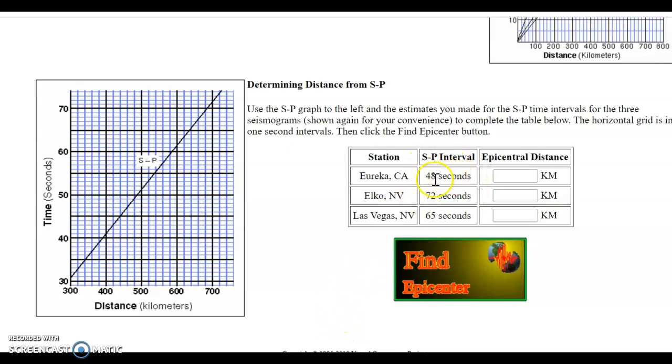S-P interval, Eureka, California was 48 seconds, we said. So we look this time between 40 and 50. We have this other black line in between for 45. So 48 is two lines, we go to 50. 48 seconds followed that blue line across. It intersects the black line right there. We drop down, that will be 480 kilometers.